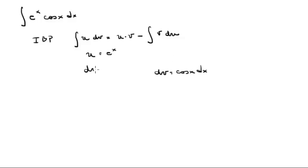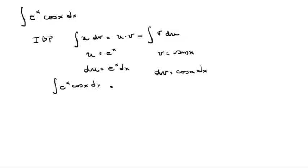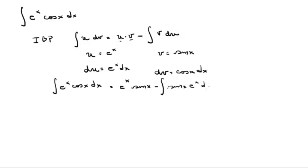So du is the derivative of e to the x, which is e to the x dx, and v is the integral of cosine of x, which is sine of x. So the integral of e to the x cosine of x equals u times v — u is e to the x, v is sine of x — minus the integral of v du, where v is sine of x and du is e to the x dx. Notice: it's almost the same integral except we now have sine of x instead of cosine of x.